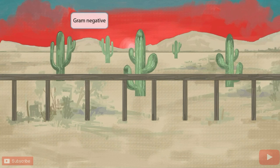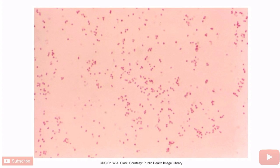I'd like to point out the red sunset. As you hopefully know from our other videos, this means that Moraxella catarralis is a gram-negative organism. This is a gram stain of Moraxella — the stain is red or pink, which is why it's a gram-negative organism, and the bacteria are circular shaped. So Moraxella is a gram-negative coccus.